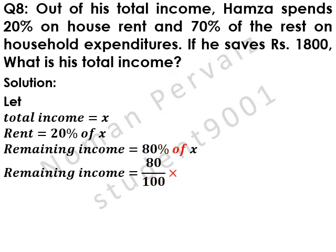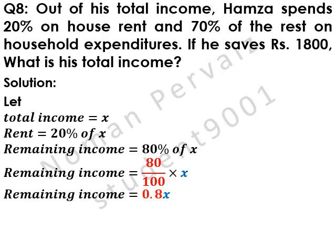In maths, 'of' is converted to a multiplication sign, and x is written as it is. Remaining income is equal to: if we divide 80 by 100, it becomes 0.8, and x is written as it is.